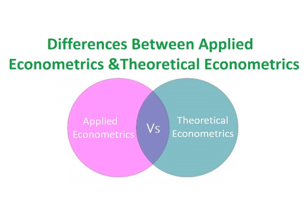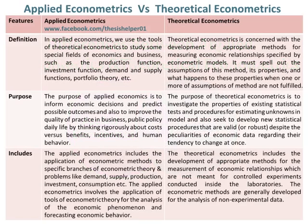Differences between Applied Econometrics and Theoretical Econometrics. In Applied Econometrics, we use the tools of theoretical econometrics to study some special fields of economics and business, such as the production function, investment function, demand and supply functions, portfolio theory, etc. Whereas, Theoretical Econometrics is concerned with the development of appropriate methods for measuring economic relationships specified by econometric models.